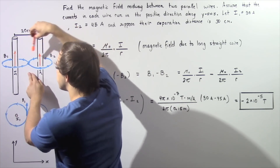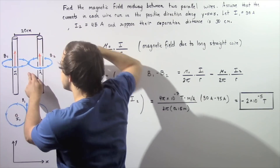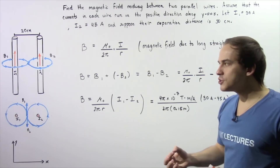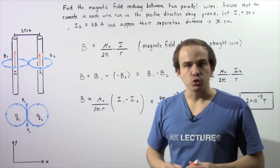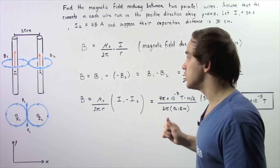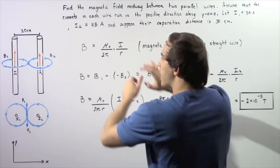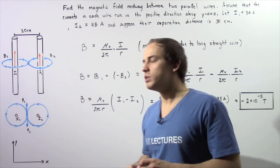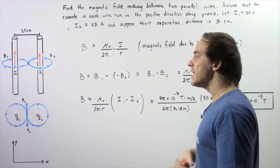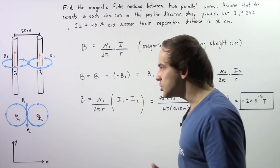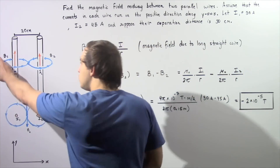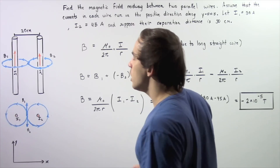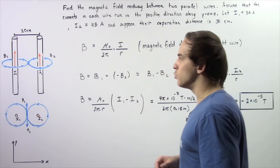The midpoint is 15 centimeters from wire 1 and 15 centimeters from wire 2. Magnetic fields have both direction and magnitude. The magnitude is given by the relevant equation, while the direction is found by applying right-hand rule number 1. We'll determine the direction of magnetic field B1 due to I1, and B2 due to I2, using right-hand rule number 1.